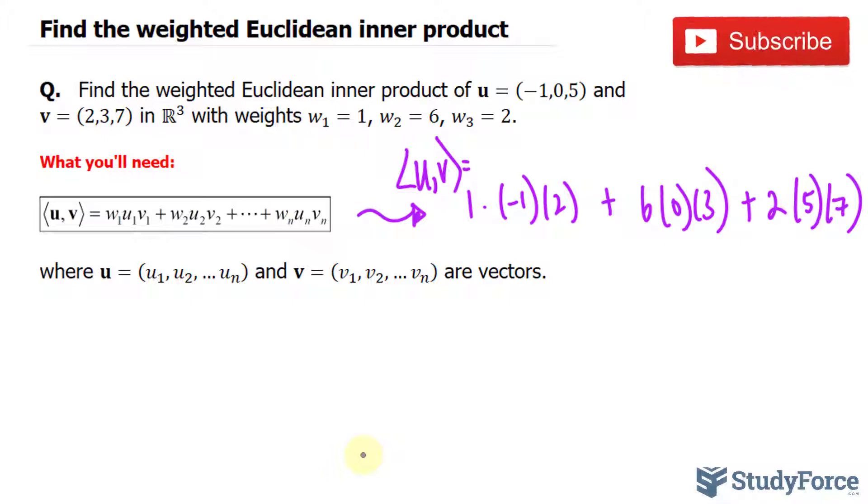Okay, the easy part. 1 times negative 1 times 2 is negative 2. That equals to 0, and that equals 2. 2 times 5 is 10, times 7 is 70. We get positive 68.